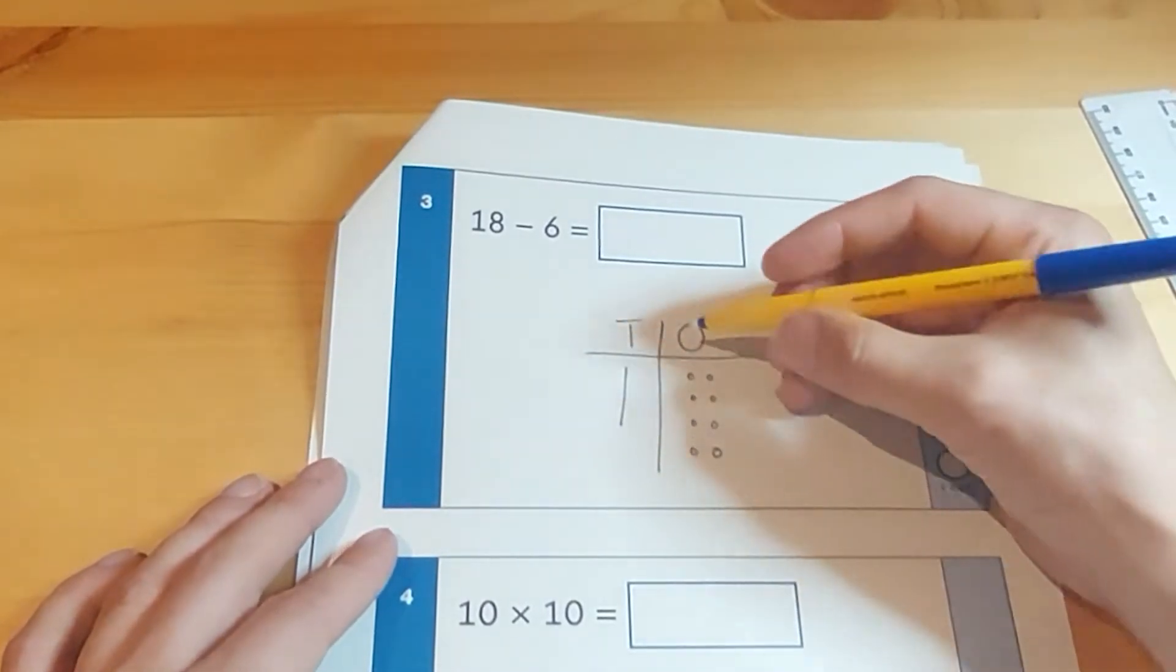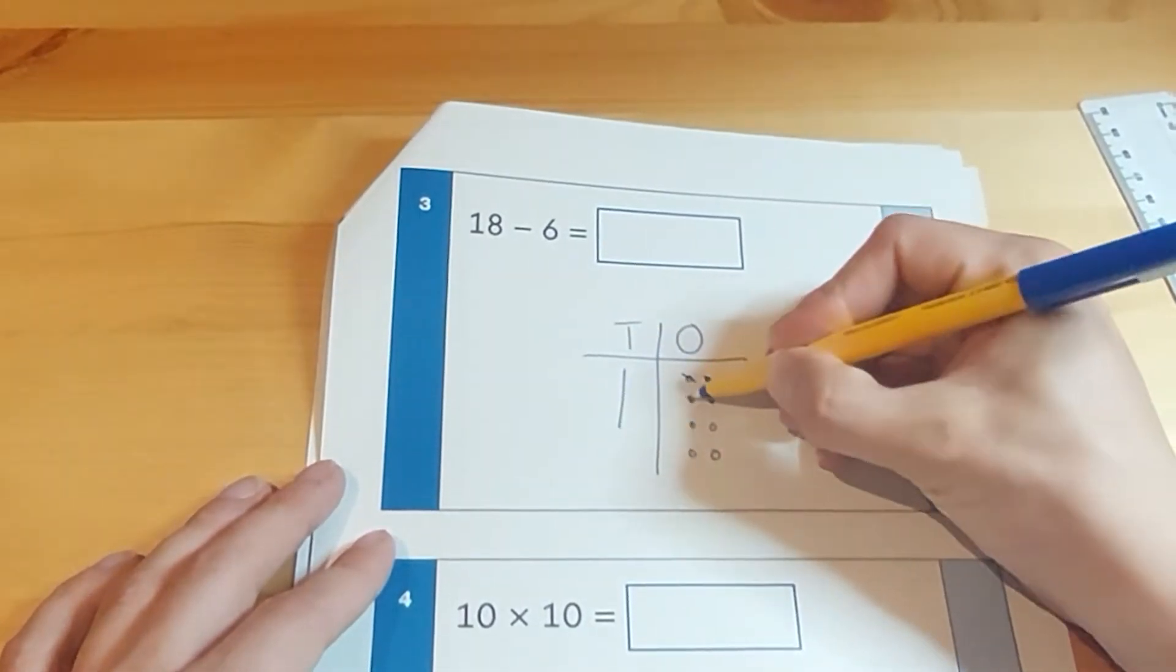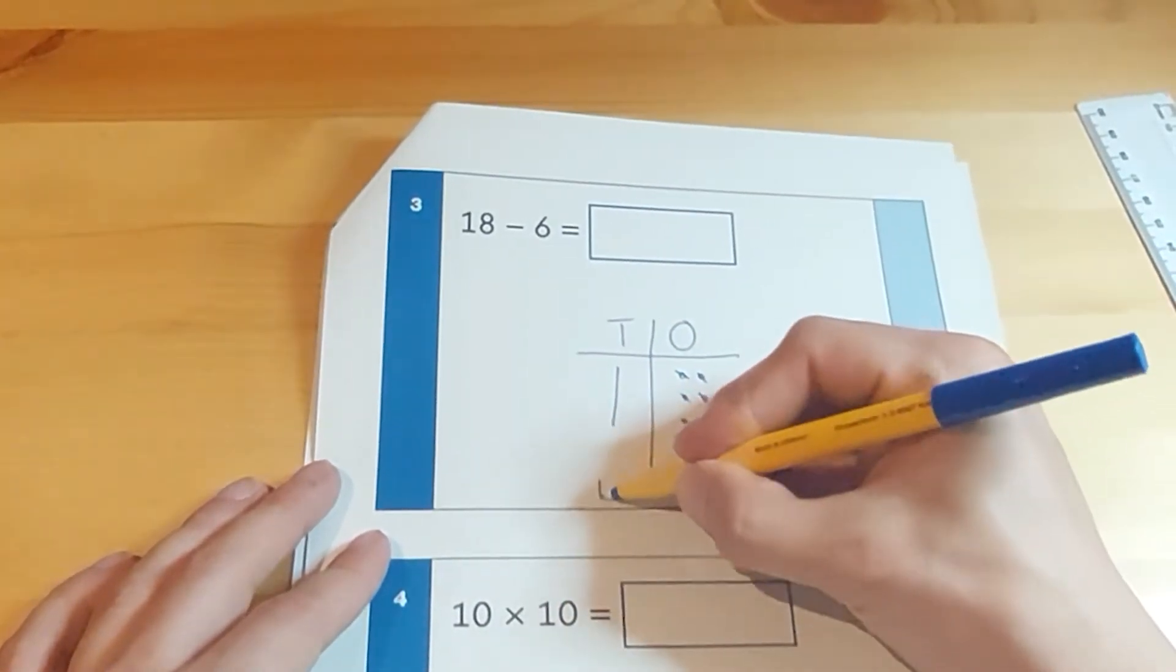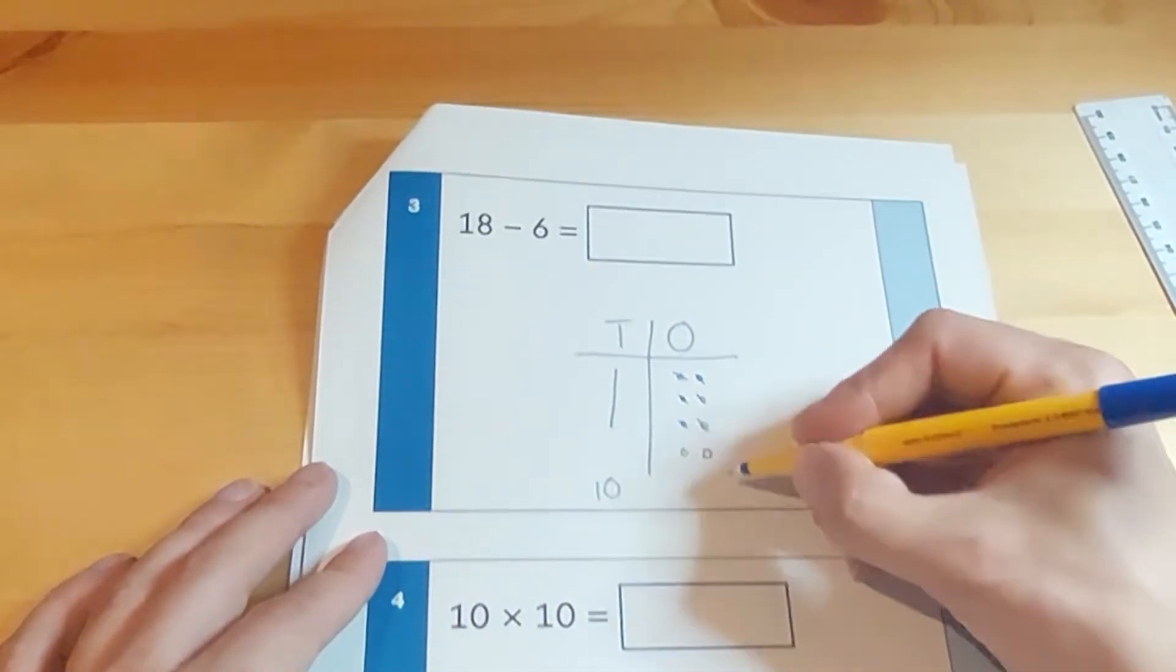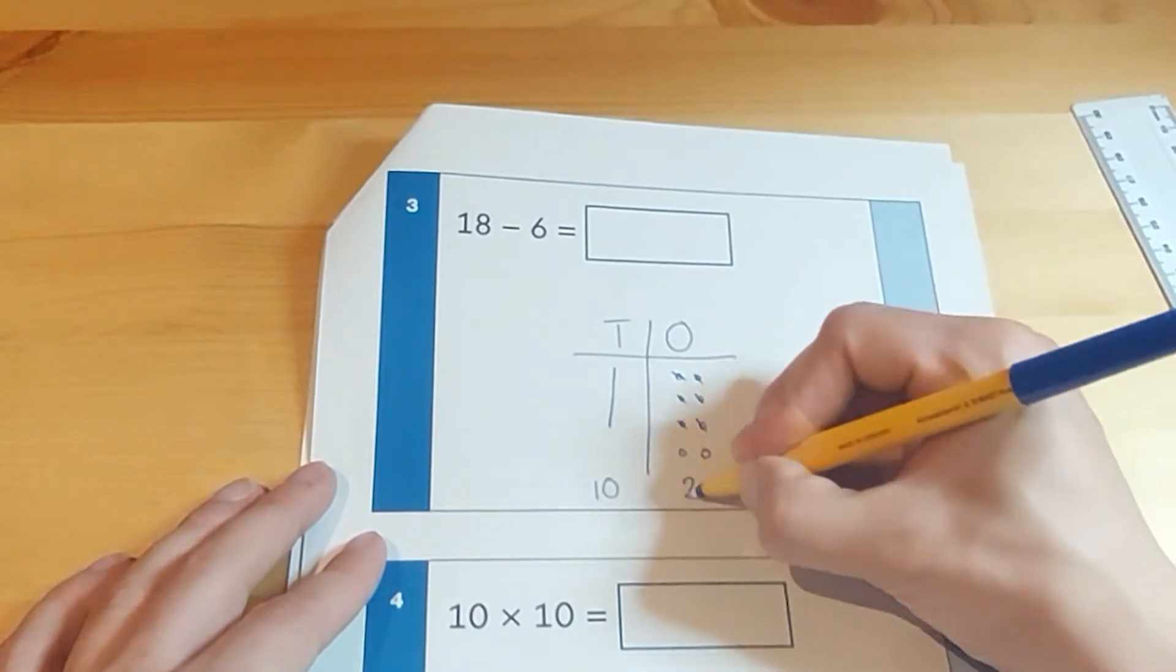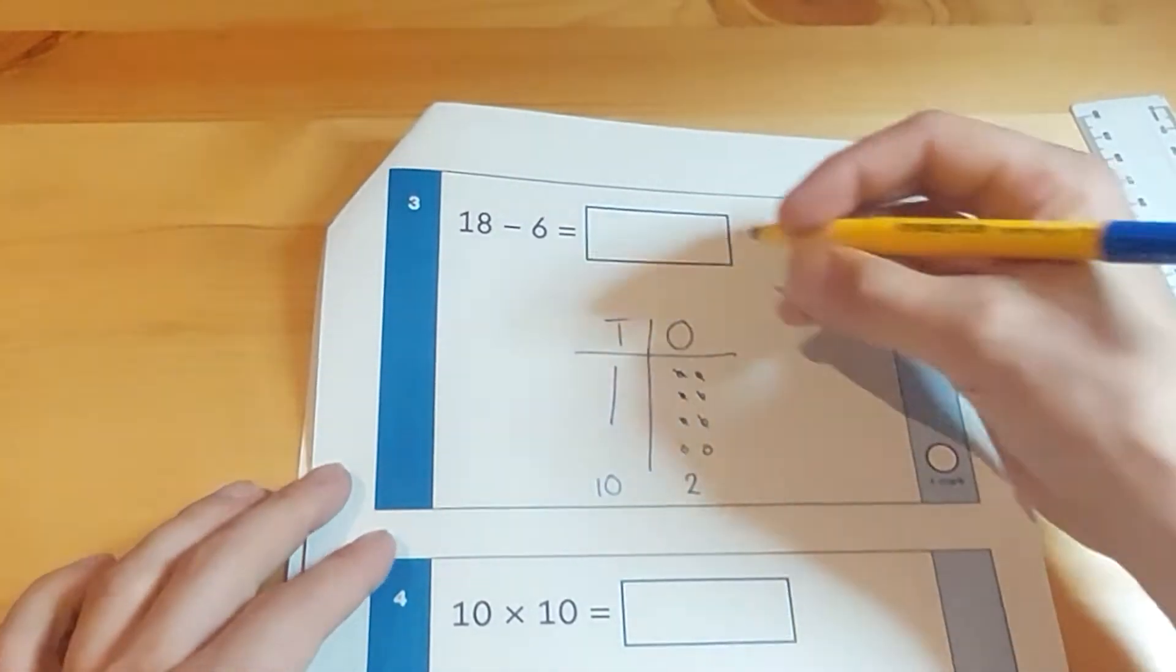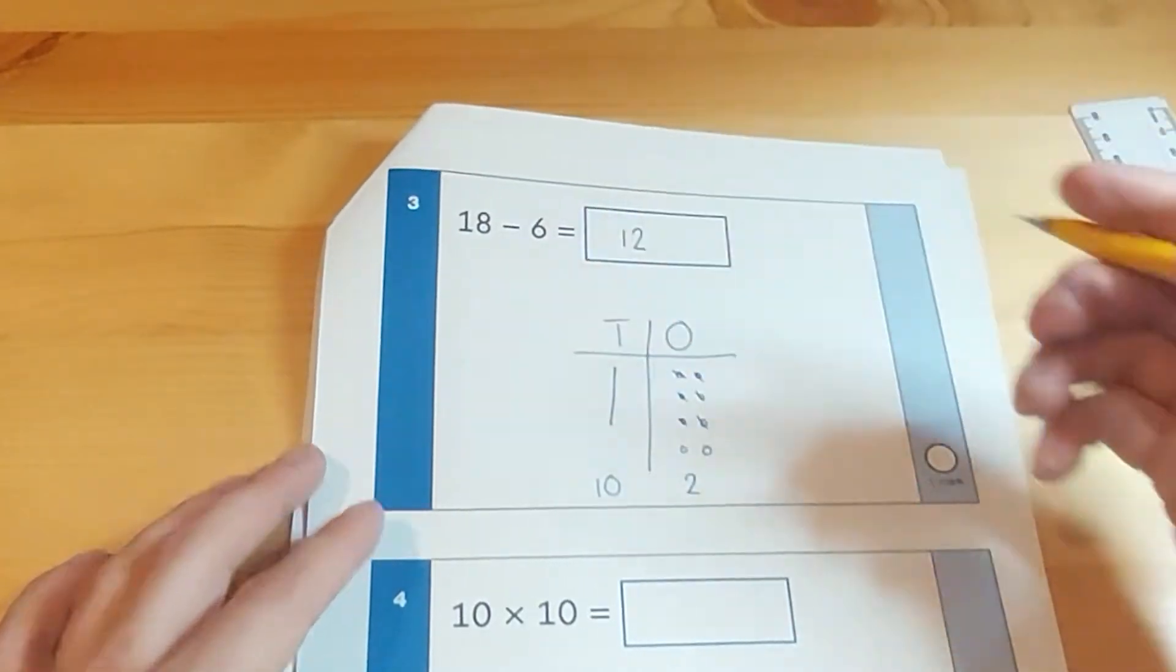All they have to do is take away the amount that's shown. So taking away 6 we'll cross out 6. One, two, three, four, five, six. What is left? We've got 10 here and we've got two here, making the same answer we had just a second ago, 12. So there's two ways they could do it.